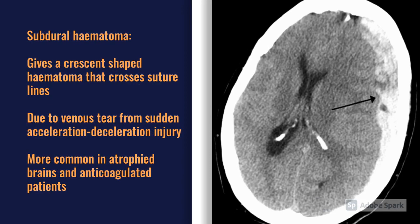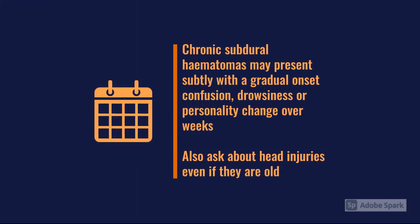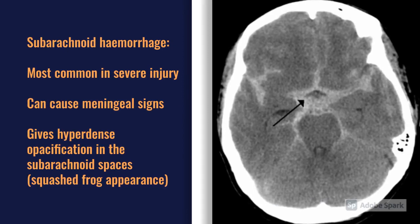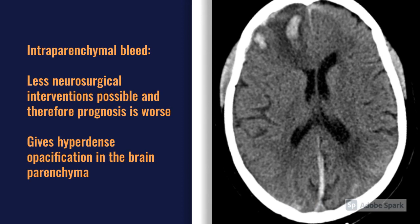Number two is a subdural haematoma, due to a venous tear typically from a sudden acceleration-deceleration injury such as a car crash. This is more common in atrophied brains — elderly people, alcoholics — and anticoagulated patients. Chronic subdurals can present quite subtly with gradually-onset confusion or drowsiness. Number three is subarachnoid haemorrhage, most common in very severe head injury and can cause meningeal signs such as neck stiffness. Number four is intraparenchymal hemorrhage, which unfortunately has fewer available neurosurgical interventions and a worse prognosis.